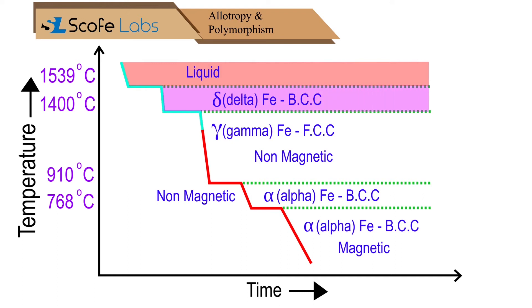At the temperature of 1400 degrees Celsius, the BCC structure of iron converted into FCC. Below 910 degrees Celsius, again FCC converted into BCC.